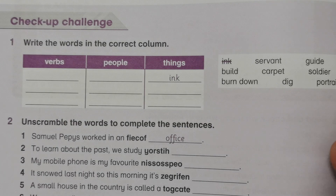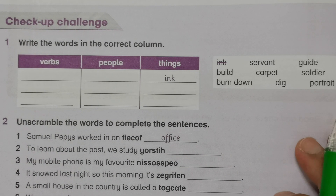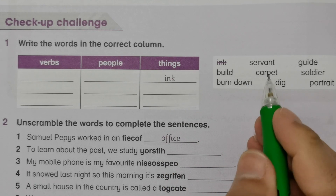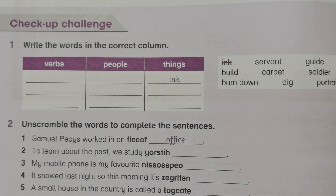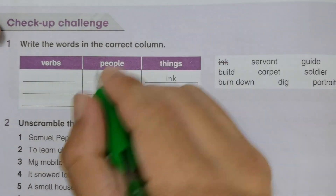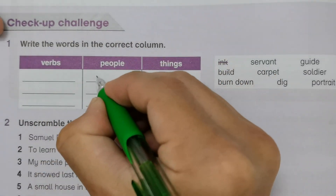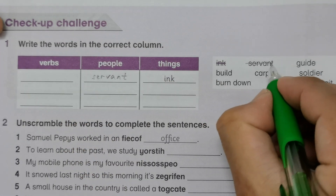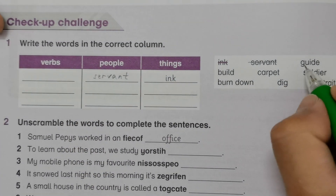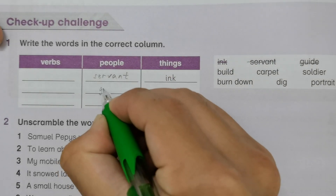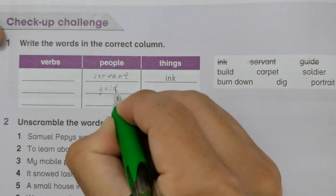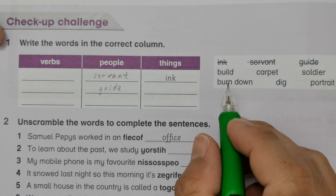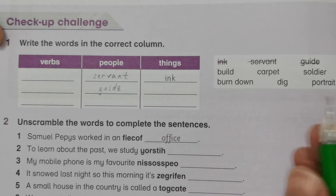So write the words in the correct column. Servant — servant is people, under the people column. And then we have guide — maybe tourist guide. And then build — build is under verbs.